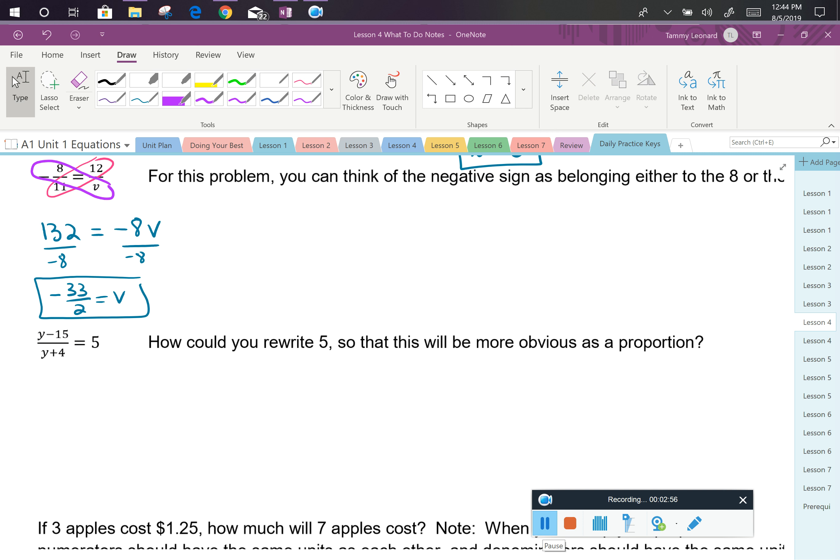In the next problem, we have one that doesn't immediately look like a proportion, so sometimes students panic over a fraction with variables in both the numerator and the denominator. But if you take a moment and you think about how could I rewrite this 5 so that this whole problem looks more obviously like a fraction—remember that you can write 5 over 1. And now you have your typical a over b equals c over d setup.